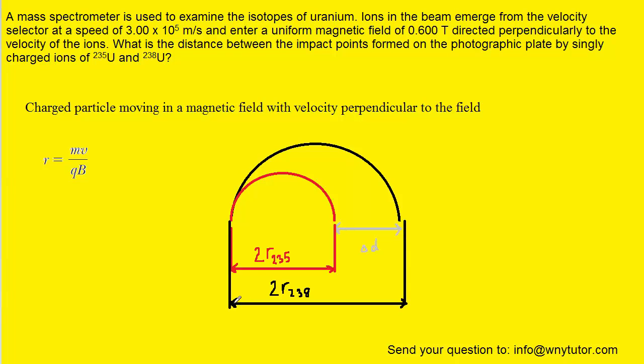So, we'll notice that we've labeled the diameter of the black circle as two times the radius of the black circle, and that we've attached a subscript of 238 to indicate the mass of the heavier particle. Notice that the heavier the mass, the greater the radius, and then hence the greater the diameter. The red circular path has a diameter of two times the radius of the lighter particle's path.